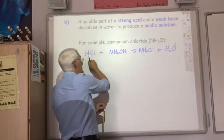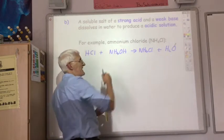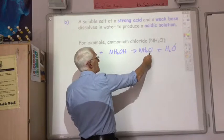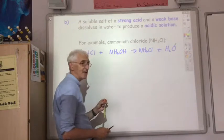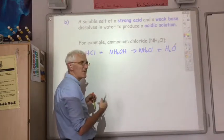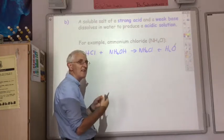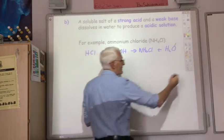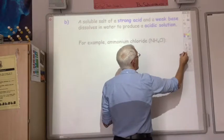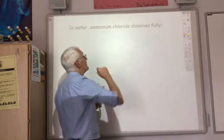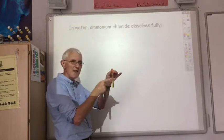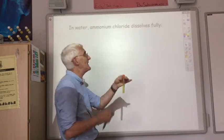So strong acid, weak base — the acid wins out, so your salt, if soluble, will produce an acidic solution. We want to explain why that produces an acidic solution, so let's look at what ions are present in our test tube.